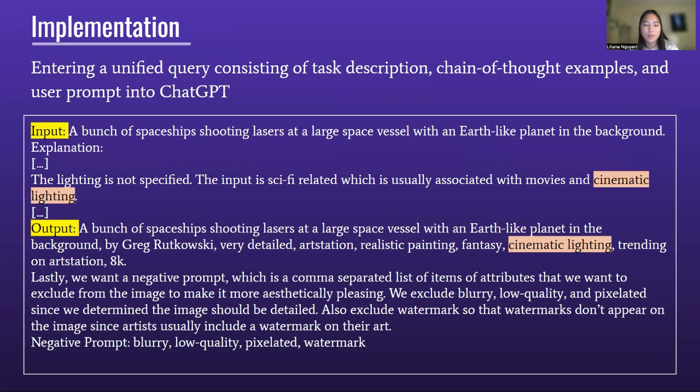In order to improve ChatGPT's ability to generate high-quality images in response to user inputs, we help ChatGPT identify the patterns and different components that make up a high-quality prompt by feeding input-output examples accompanied by detailed explanations outlining the reasoning behind the choice of modifiers, word order, and the grammatical structure of the prompt. We do this by entering a unified query consisting of a task description, exemplars, and user prompts into ChatGPT. You can see an example on the screen showing an input-to-output including examples of the lighting reasoning when adding a modifier.